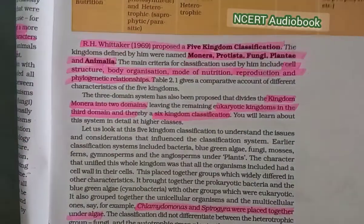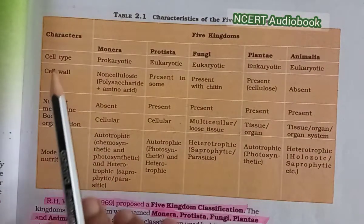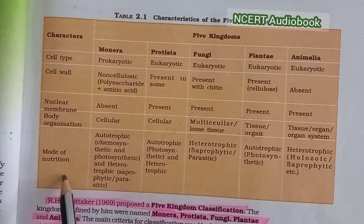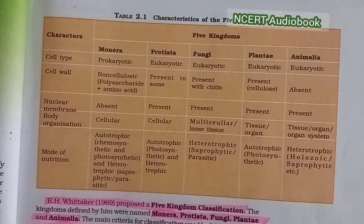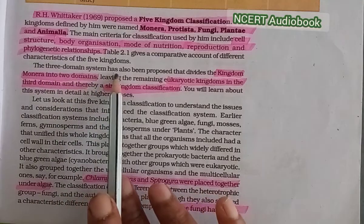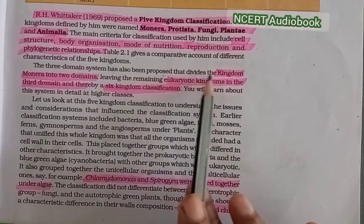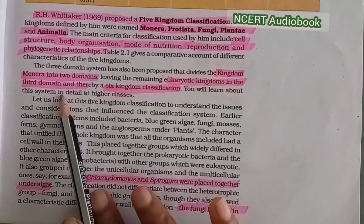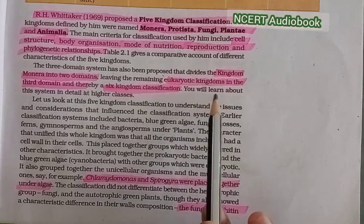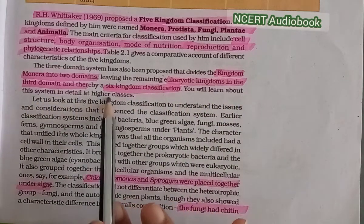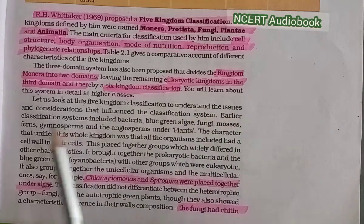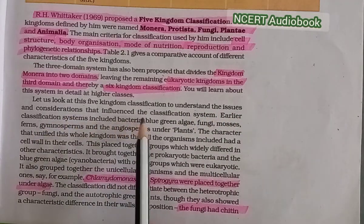In table 2.1, cell type, cell wall, nuclear membrane, body organization and mode of nutrition are the characters on the basis of which organisms are divided. The three domain system has also been proposed, which divides the kingdom Monera into two domains, leaving the remaining eukaryotic kingdoms in the third domain, thereby giving a six kingdom classification. This system will be studied in detail at higher classes.